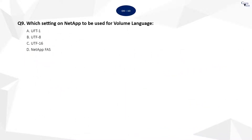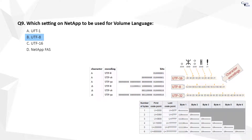Question 9. The correct answer is B. To successfully browse and restore NAS data on a NetApp file server, it is recommended to use the UTF-8 setting for volume language. If the volume language is not set to UTF-8, then foreign characters or Latin extended characters will not be displayed properly when the backup data is browsed. To restore these files or directories, the parent directory containing them will need to be restored.